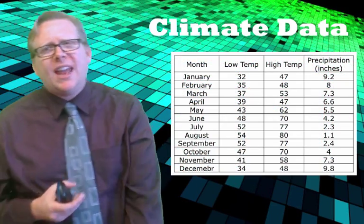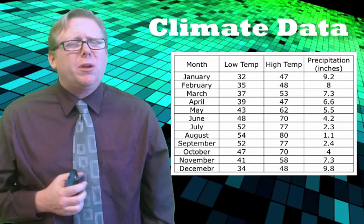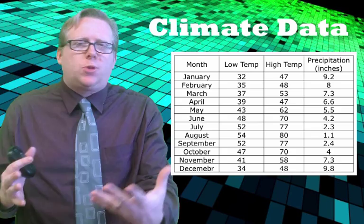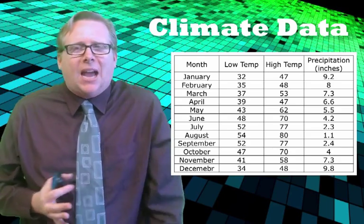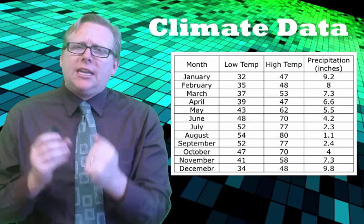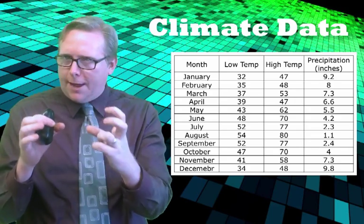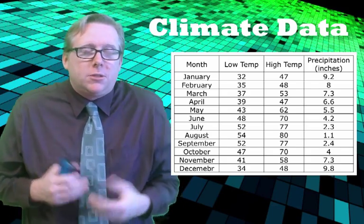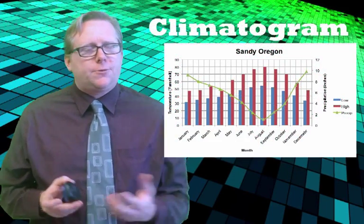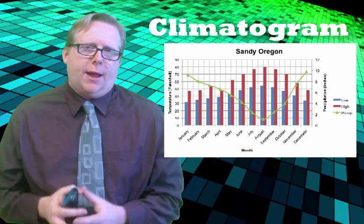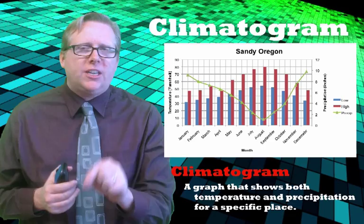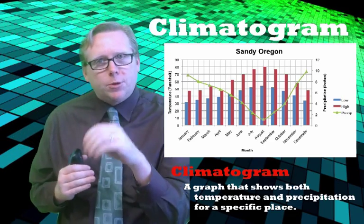Sometimes it's really hard to figure out what data means if you just put it in a data chart. There is a data chart right there — that is all the information you would need for a climatogram for Sandy, Oregon. I can't just look at that and figure out the relationship to weather and climate here for Sandy. But I can organize this into a graph that gives a visual, graphic display showing the relationship. And there it is for Sandy. A climatogram is defined as a graph that shows both the temperature and precipitation for a very specific place — the average temperatures and the precipitation.